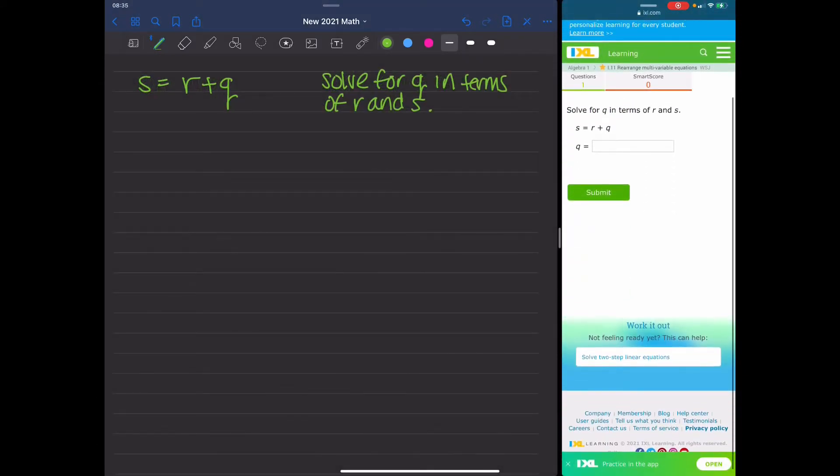So for the next one, it says to solve for Q in terms of R and S. So whenever I see solve for Q, that means I want to isolate that variable on one side and get all the other variables and constants on the other. So in this case, I'm going to say S equals R plus Q. So I'm going to subtract R from both sides. So S minus R equals Q, and that's my solution.